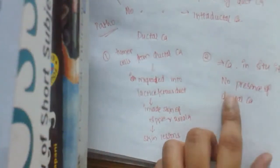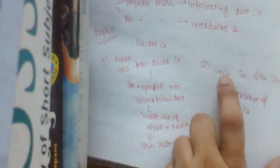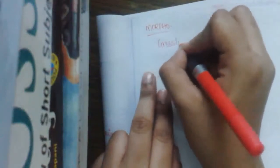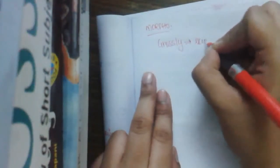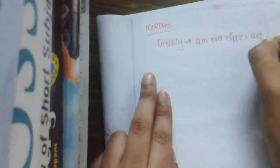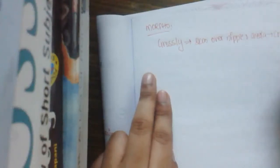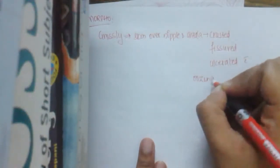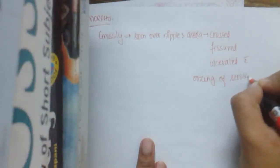Among the two pathogeneses, which is preferred depends on the individual case. Morphologically, grossly, the skin over the nipple and areola is crusted, fissured, and sometimes even ulcerated with oozing of serosanguineous fluid.